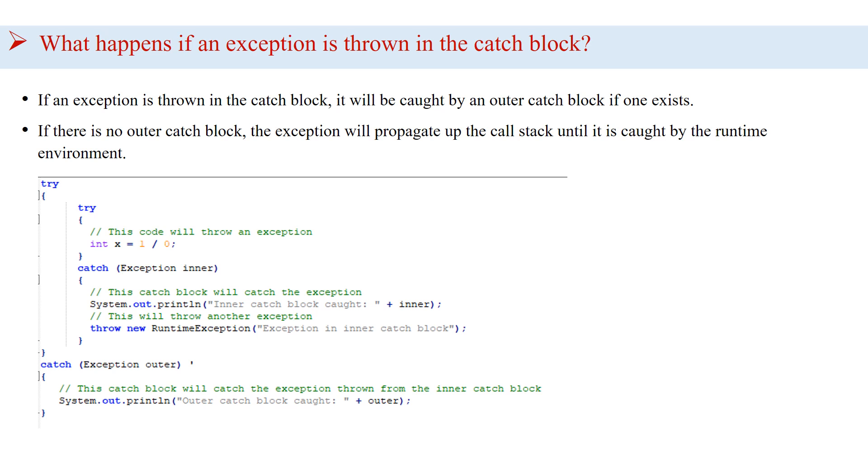Let's understand by an example. We have a nested try-catch block. The inner try block throws an exception by trying to divide 1 by 0, and the inner catch block catches that exception and then throws a new exception.